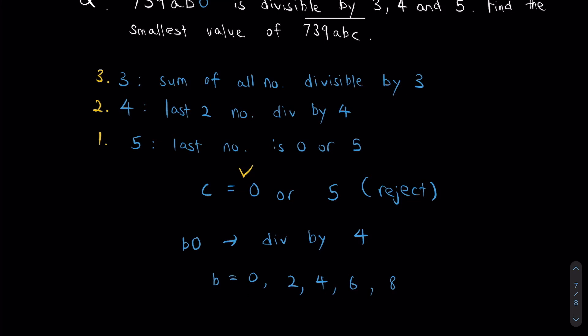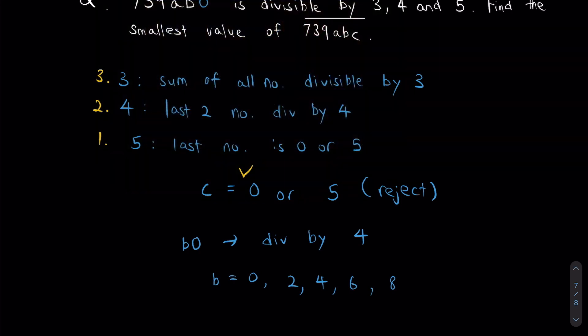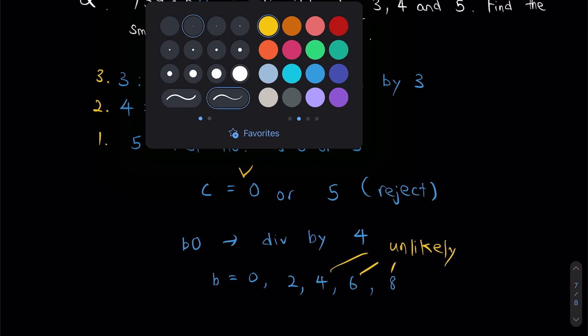However, let's look at the question. The question says, find the smallest value possible of this 6 digit number. So if we want the number to be as small as possible, it's more likely that the larger B digits, let's say these 3, these would be unlikely. We won't cancel them out yet, but we can say that they are unlikely to be those numbers.